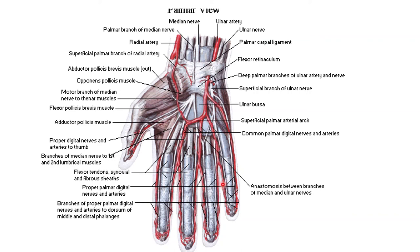Here we can clearly make out the branches of the palmar arch — the first, second, third, and fourth digital branches. We can see the artery joining the palmar metacarpal branch, which then divides into the digital branches, the palmar digital branches, close to the web space. This is how it supplies the medial three and a half fingers and also the medial two-thirds of the palm. Therefore, the superficial palmar arch does not supply the radial side of the index finger and both sides of the thumb.